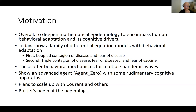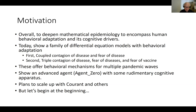Today I want to show a family of differential equation models with behavioral adaptation. First I want to show models of coupled contagion where there's a contagion of disease and also a contagion of fear of the disease that changes people's behavior and changes the course of disease. Then a second model just published in the Royal Society called triple contagion, which includes a contagion of disease, a contagion of fear of the disease, and a contagion of fear of the vaccine. Then I'll show briefly an advanced agent called Agent Zero with some rudimentary cognitive apparatus, including simple equations for fear learning. Finally I'll talk about our plans to scale this up with Courant and other colleagues.